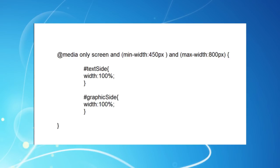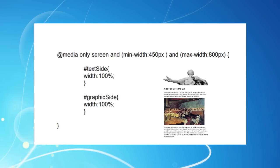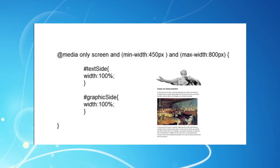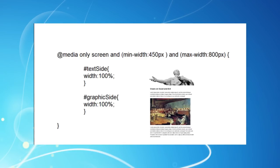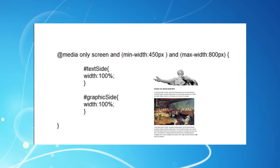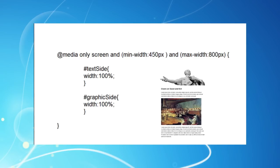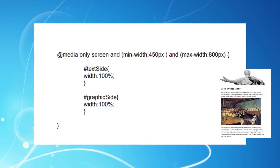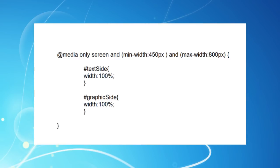Since everything's getting too cramped, what we want to happen is for our TextSide div to take over the whole area below our banner graphic. So we set its width at 100% of the page wrapper container. But obviously now there is no space for our div graphic side to sit next to it, so the browser engine will push this down below TextSide.